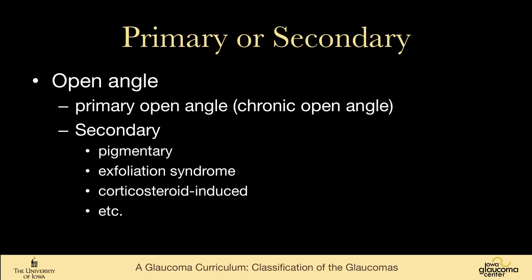For open angle glaucoma, primary open angle glaucoma — sometimes called chronic open angle glaucoma — is the most common glaucoma in the United States. But there are many secondary open angle glaucomas, including pigmentary glaucoma, exfoliation syndrome, corticosteroid-induced glaucoma, etc.